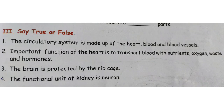Next, Section 3: Say true or false. Number 1: The circulatory system is made up of the heart, blood, and blood vessels. The answer is true.